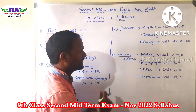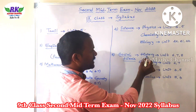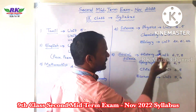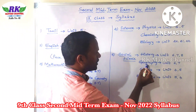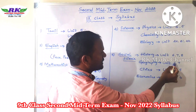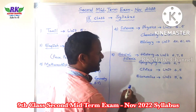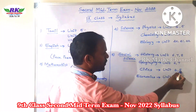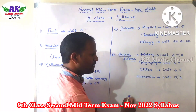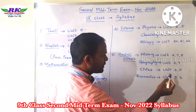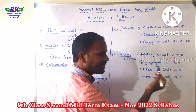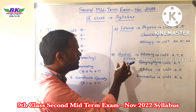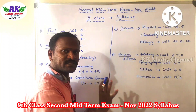Next, Social Science. History — units 6, 7, and 8. Geography — units 6 and 7. Civics — units 4 and 5. And Economics — units 3 and 4. So this is the Social Science syllabus.